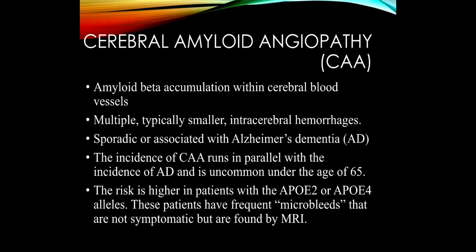Cerebral amyloid angiopathy is due to amyloid beta — the same as in Alzheimer's disease — accumulating within cerebral blood vessels. This usually results in multiple small, often asymptomatic hemorrhages in the brain. It can be associated with Alzheimer's dementia but doesn't have to be, and its incidence runs in parallel with Alzheimer's — very uncommon under age 65. The ApoE2 and ApoE4 alleles are associated with cerebral amyloid angiopathy, just as with Alzheimer's.